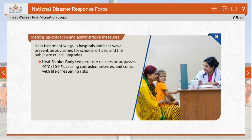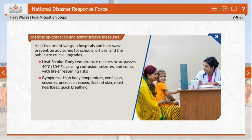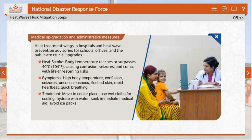Heat stroke is life-threatening. Symptoms include high temperature, confusion, seizures, unconsciousness, flushed skin, rapid heartbeat and rapid breathing. Treatment of heat stroke consists of moving to a cooler place, cooling with wet cloths, hydration with water, and seeking medical help immediately. Avoid using ice packs.